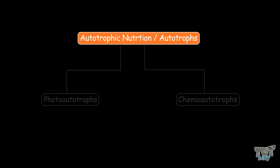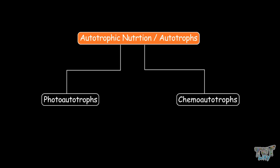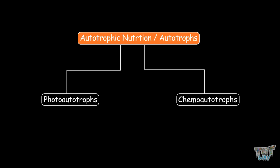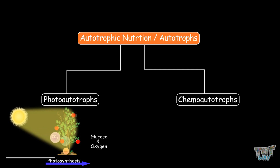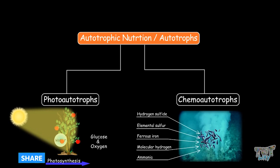Now we know about autotrophs and the two types: photoautotrophs and chemoautotrophs. The main difference is that photoautotrophs use sunlight as the main source of energy, while chemoautotrophs use sources like hydrogen sulfide, elemental sulfur, ferrous iron, molecular hydrogen, and ammonia.